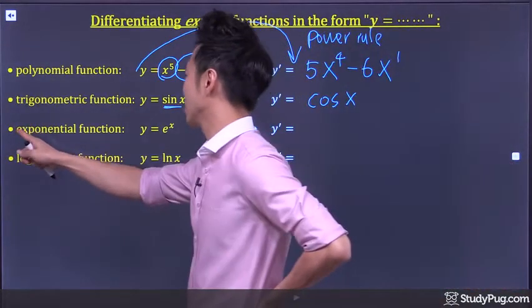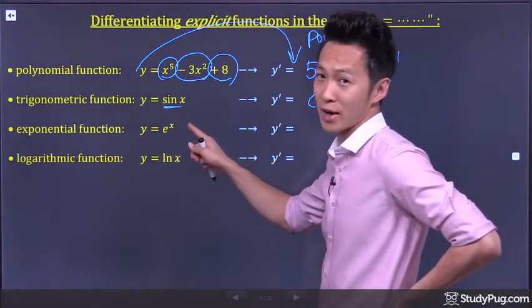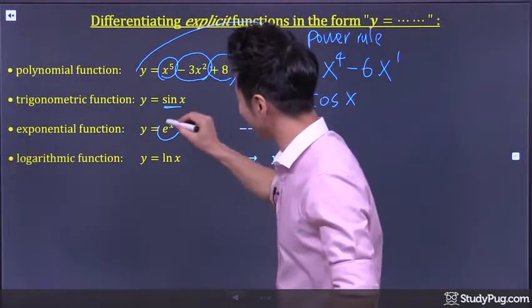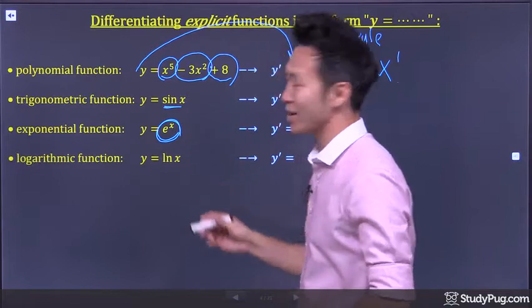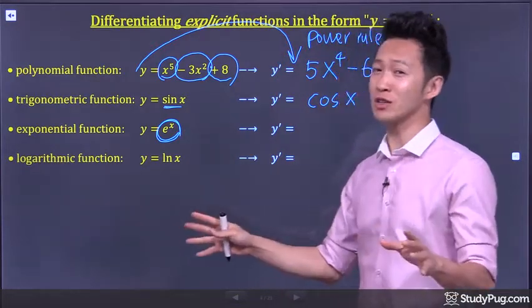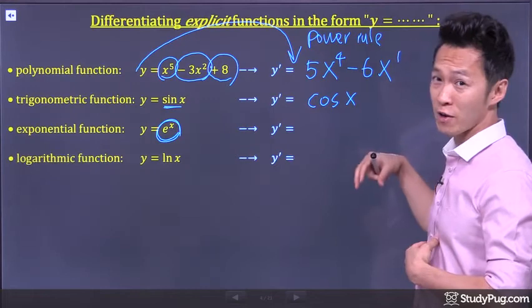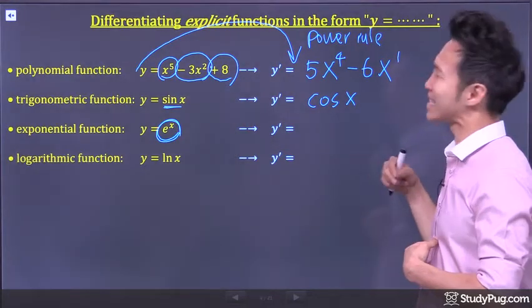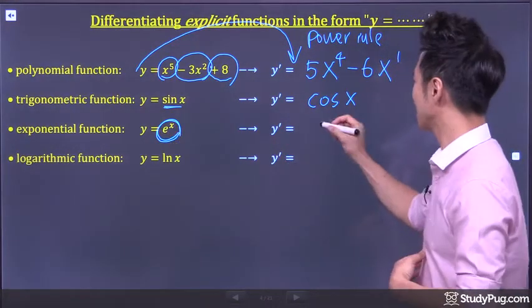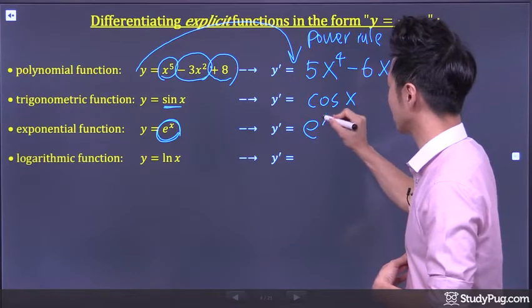Differentiating an exponential function: y is equal to e to the power of x. This one is very special — e to the power of x is the only function in the universe where the derivative is exactly the same as the function itself. So the derivative is just the function itself.